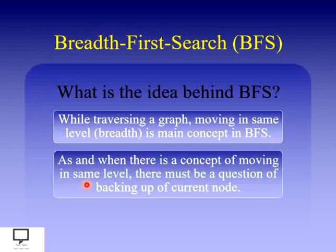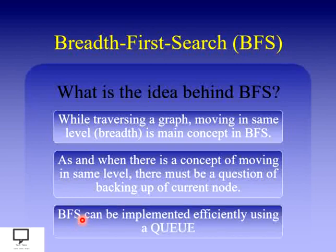Whenever you want to traverse your graph at the same level, we have to keep track of the current node to return back to it and check all its adjacent nodes. The concept of the Queue data structure is very important here, and with the help of a Queue you can implement breadth first search traversal very efficiently.